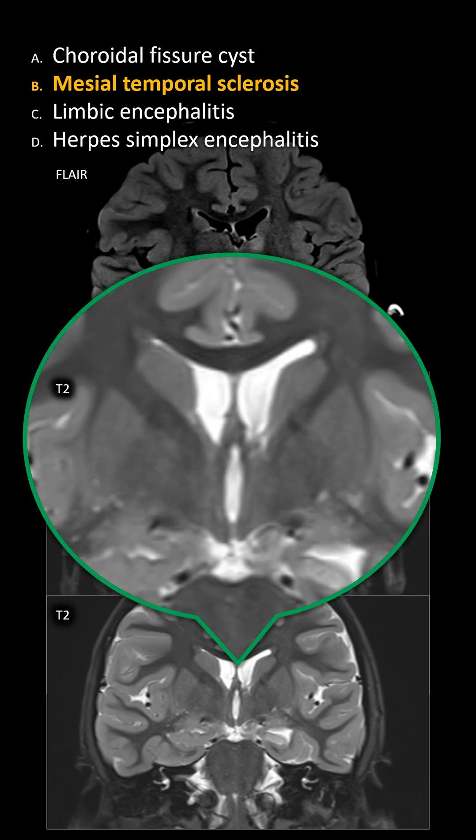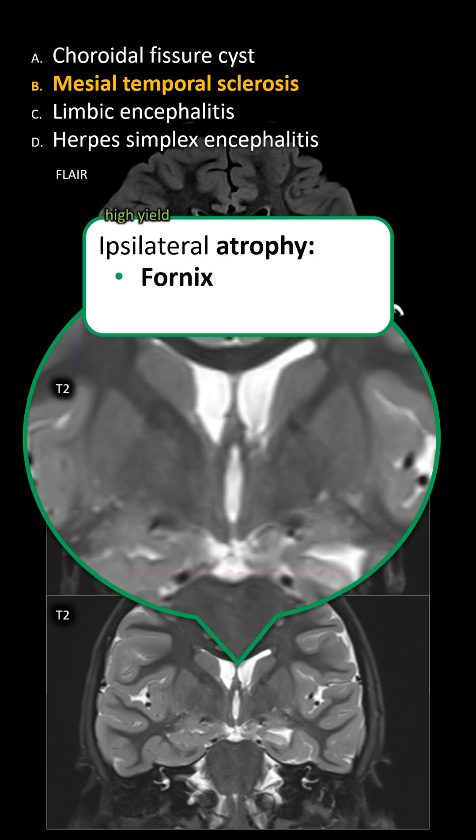In some cases, you can also see effects on the ipsilateral limbic loop, with ipsilateral atrophy of the fornix — especially the anterior column — and the mammillary body. Remember, the hippocampus is connected to the mammillary body via the fornix.